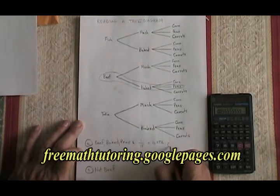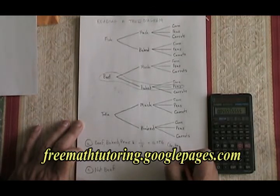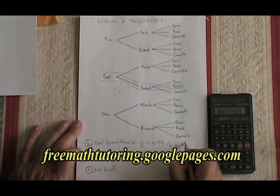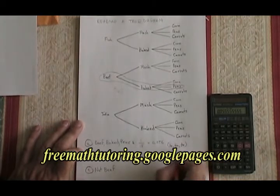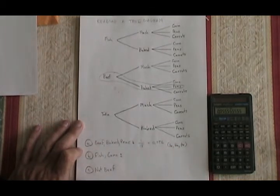The ordered triad looks like this: I put BE for the beef, BA for the baked potato, and PE for the peas. That's an ordered triad, and it's the only one that satisfies these conditions.